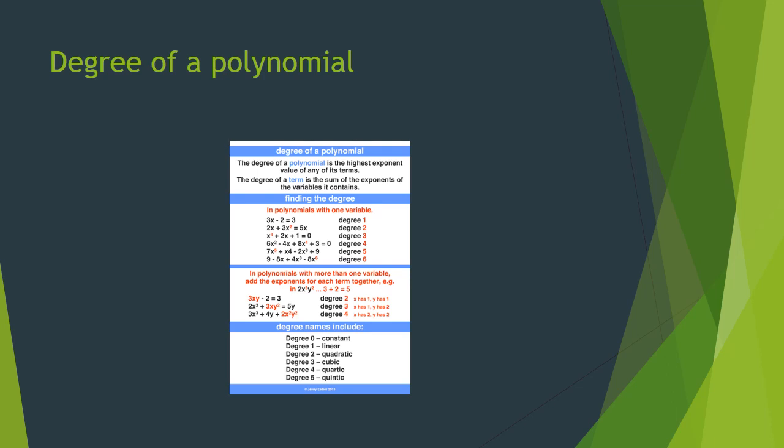The degree of a polynomial is the highest power of the variable appearing in any of its terms, or we can say it is the highest exponent value of any of its terms. For example, 3x plus 2 is a polynomial in x with degree 1, and it has two terms. 5x² minus 7x plus 3/2 is a polynomial in x of degree 2. The indices of the power of x in the three terms are 2, 1 and 0 respectively. As the highest power is 2, the degree of the polynomial is 2.